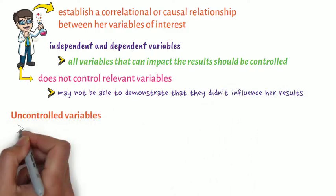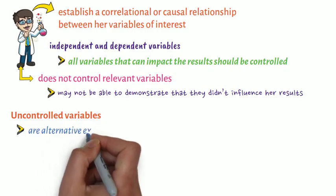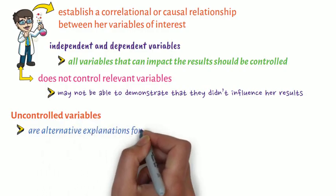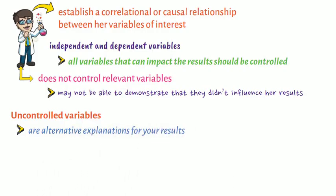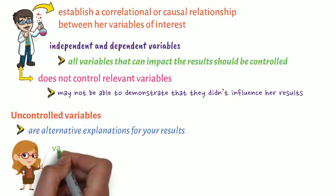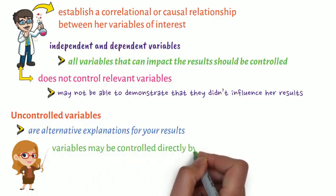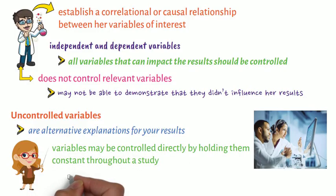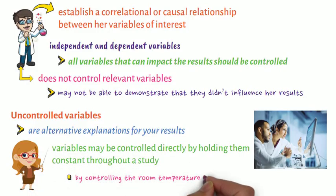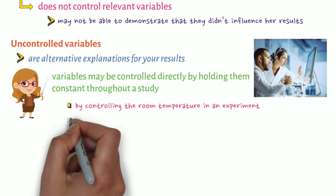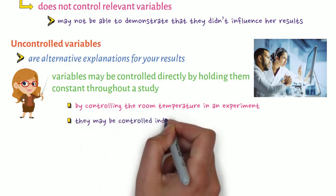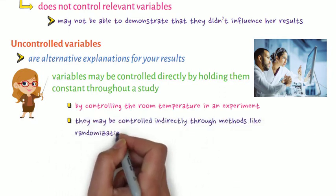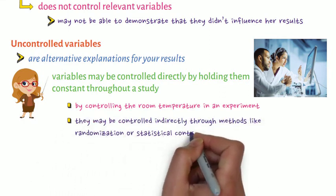Uncontrolled variables, therefore, are alternative explanations for your results. It is important to note that variables may be controlled directly by holding them constant throughout a study — for example, by controlling the room temperature in an experiment — or they may be controlled indirectly through methods like randomization or statistical control, for example, to account for participant characteristics like age in statistical tests.